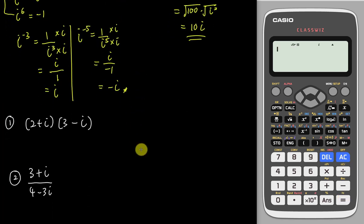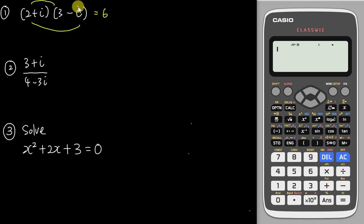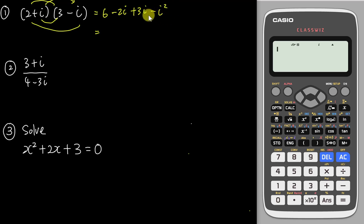I've prepared some examples. If the question asks you to expand (2 + i)(3 − i), you can get the answer directly from the calculator, but I'll teach the manual way first. Multiply 2 by both terms: 2 times 3 is 6, and 2 times negative i is negative 2i. Then multiply i by both terms: i times 3 is 3i, and i times negative i is negative i squared. Since i squared equals negative one, negative i squared becomes positive one.